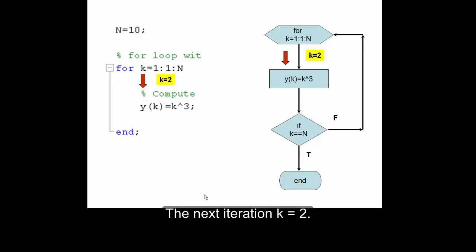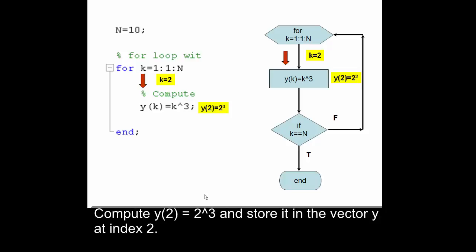The next iteration, k equals 2. Compute y(2) equals 2 cubed and store it in the vector y at index 2.